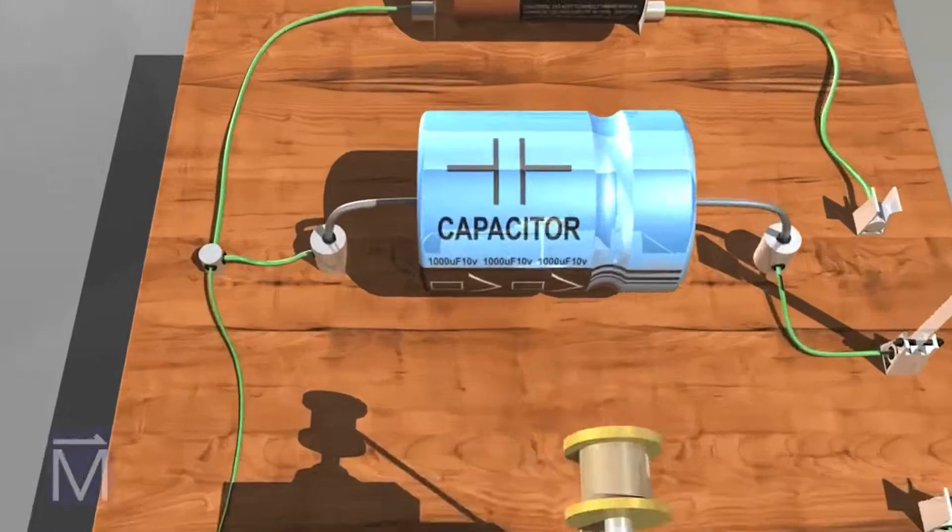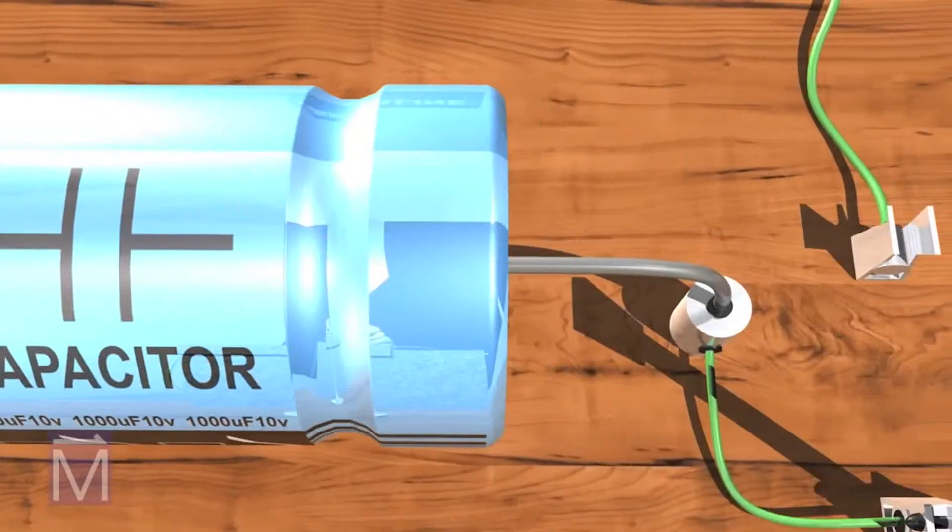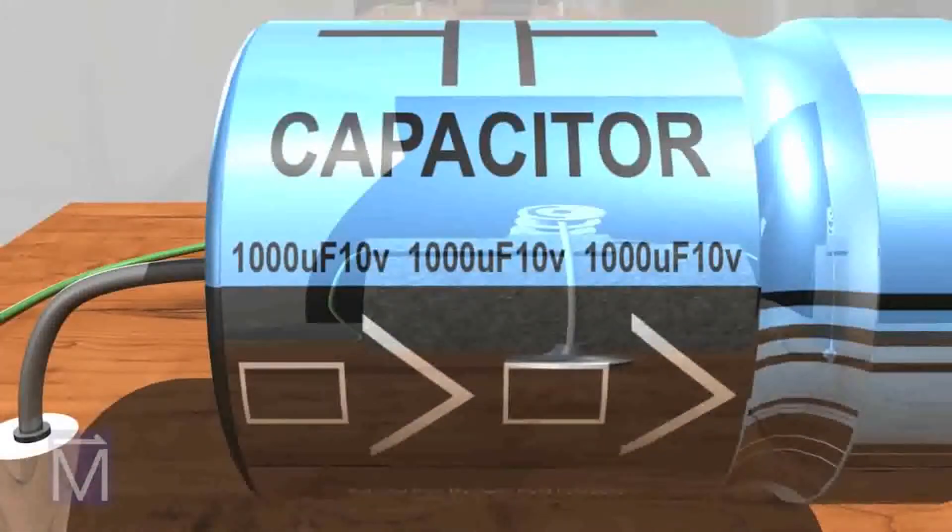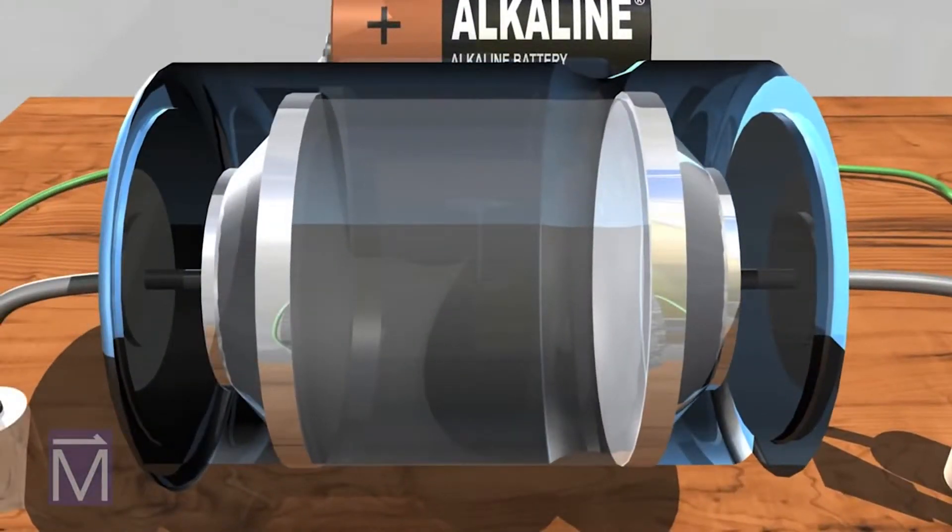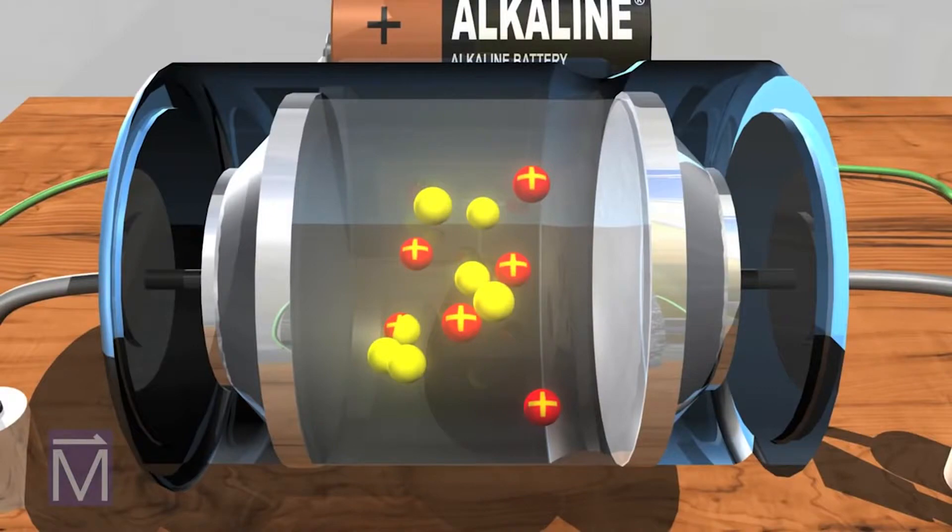Like a battery, a capacitor has two terminals, positive and negative. Inside the capacitor, the terminals connect to two metal plates separated by an insulator that keeps the plates from touching each other and allows them to hold opposite charges, maintaining an electric field.